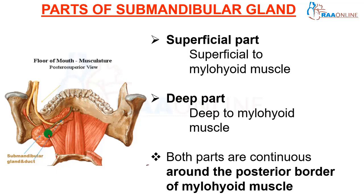Both the superficial and deep parts are continuous with each other along the posterior border of the myelohyoid muscle. The superficial part lies superficial to the myelohyoid muscle, or below the oral diaphragm, while the deep part lies deep to the myelohyoid muscle. Both parts are connected along the posterior border of the myelohyoid muscle.